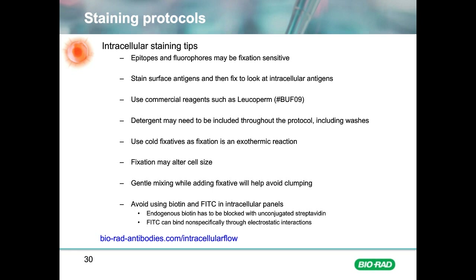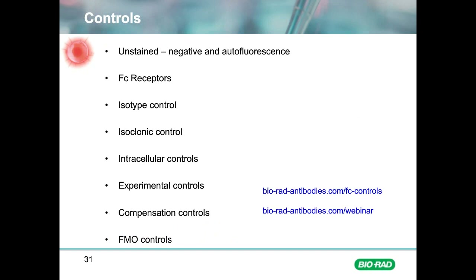The next consideration is controls. As with all experiments, the right controls are important. The most popular controls include unstained and experimental controls, as well as flow-specific controls such as compensation controls and fluorescence minus one (FMO) controls. For more information on these controls, go to bioradantibodies.com/FC-controls, or watch our webinar 'Take Control of Your Flow Cytometry,' available on demand at bioradantibodies.com/webinars.